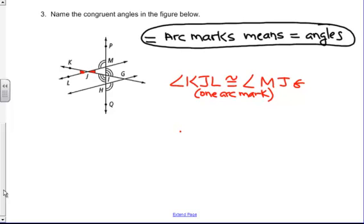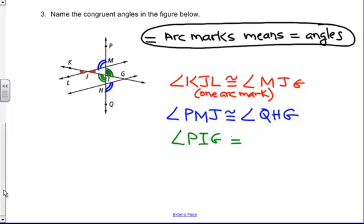Now I am going to go to the ones that have two arc marks. I can see them here, here, and here. So I know that angle PMJ has to be congruent to angle QHG, because they have two arc marks. And lastly I go to the ones that have three arc marks. One, two, three, one, two, three, same amount. So I know that angle PIG has to be congruent to angle KIQ.